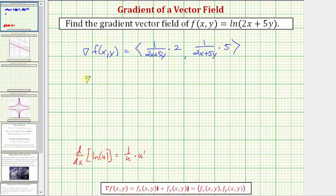Simplifying, the gradient vector field, or del f, has an x component of two divided by the quantity (2x + 5y), and a y component of five divided by the quantity (2x + 5y).